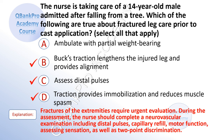The correct answers are B. Buck's traction lengthens the injured leg and provides alignment. C. Assess distal pulses. And D. Traction provides immobilization and reduces muscle spasm. Explanation: fractures of the extremity require urgent evaluation. During the assessment, the nurse should complete a neurovascular examination including distal pulses, capillary refill, motor function, and two-point discrimination.